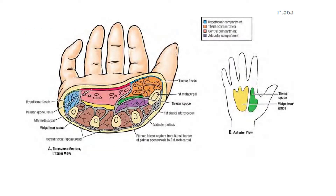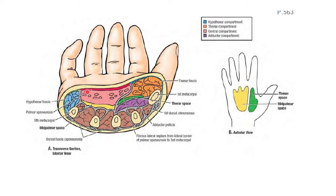To begin with the mid palmar space, this mid palmar space is a potential space which lies deep to the palmar aponeurosis. The fascial space lies deep to the palmar aponeurosis. We can see the area occupied by the mid palmar space and the thenar space shown in yellow and green shading in this cross-sectional diagram. The yellow represents the mid palmar space and the green indicates the thenar space.